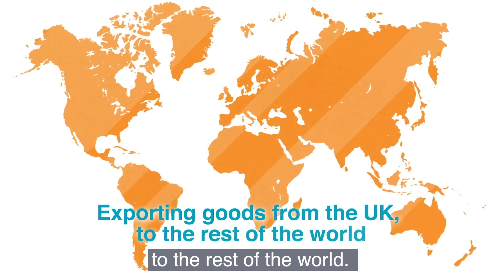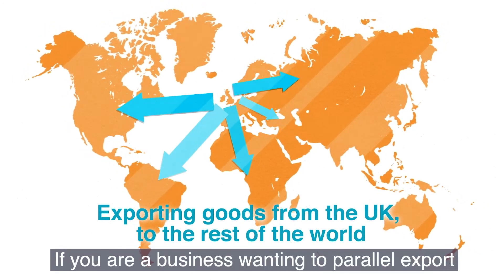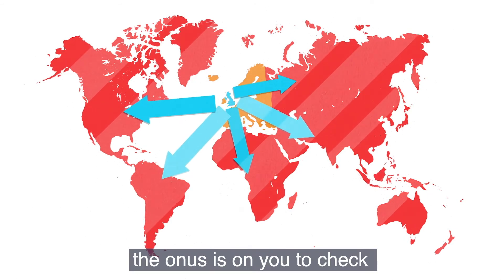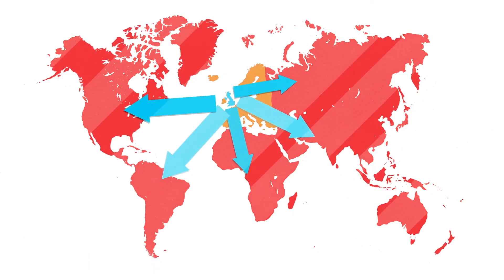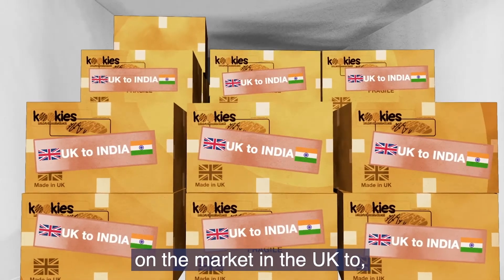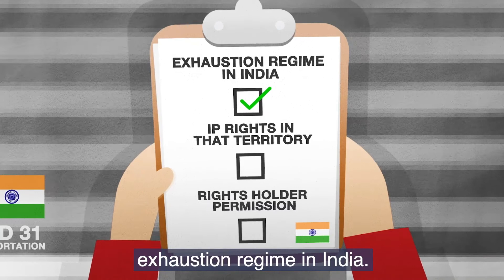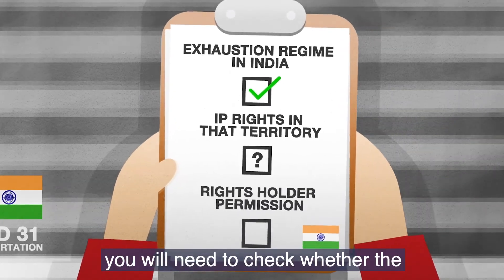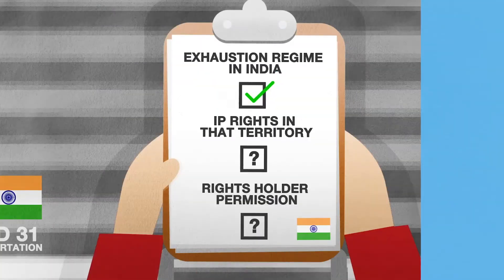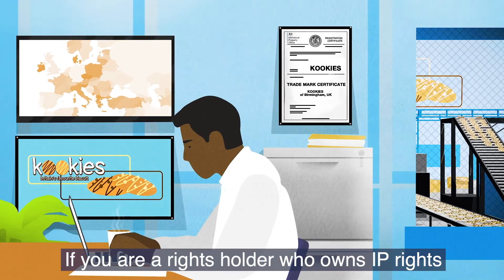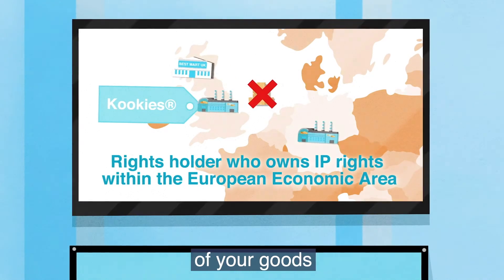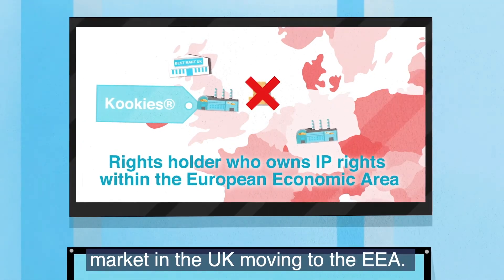Exporting goods from the UK to the rest of the world. If you are a business wanting to parallel export goods from the UK to any other country not including one in the European Economic Area, the onus is on you to check the exhaustion regime in that country. For example, if you want to parallel export cookies first placed on the market in the UK to India, you would need to check the exhaustion regime in India — specifically, whether the rights holder has protection in that territory, in order to determine if you need to obtain their permission or not. If you are a rights holder who owns IP rights within the European Economic Area, the UK's current exhaustion regime allows you to stop the parallel export of your goods that have been first placed on the market in the UK from moving to the EEA.